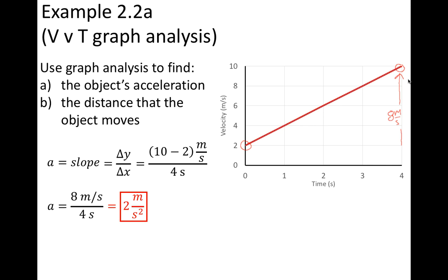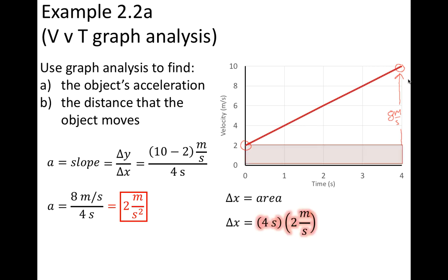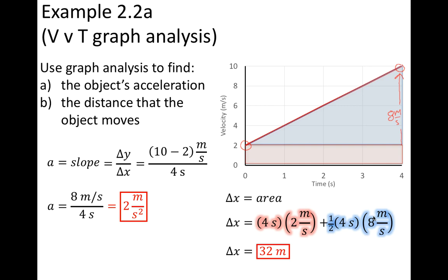To find the distance that the object moves, we use the area. You can divide this shape into a rectangle and a triangle. The rectangle, highlighted in red, is a 4 by 2 rectangle. The triangle, highlighted in blue, is a 4 by 8 triangle. Using the formulas for area of a rectangle — base times height — and area of a triangle — half base times height — and crunching the numbers, the area and therefore the displacement is 32 meters.